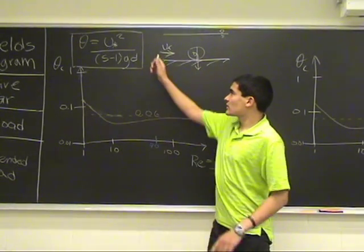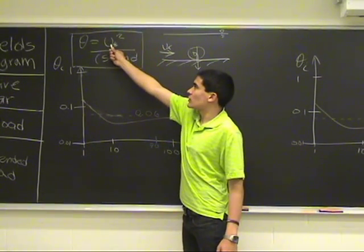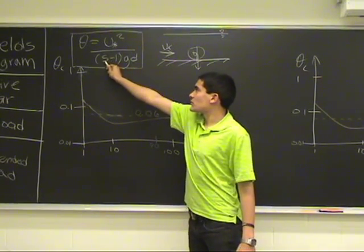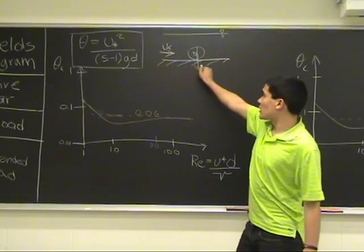So let's look at the shields parameter. This is the friction velocity squared as we know and this is the specific weight, gravity, and the diameter of a particle.